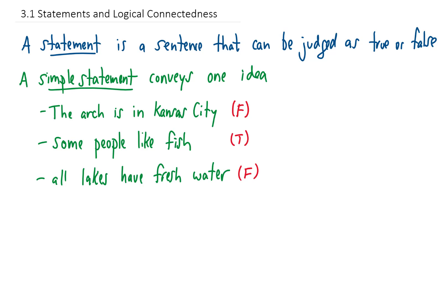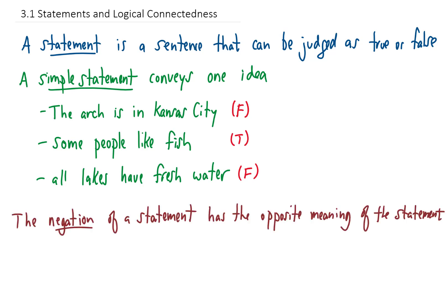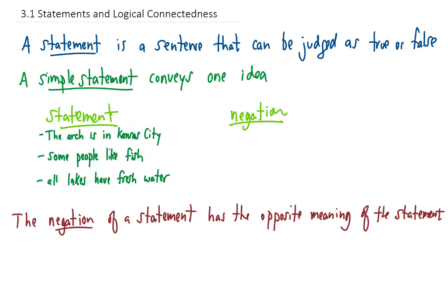The negation of a statement has the opposite meaning of that statement. The negation of a true statement is false, and the negation of a false statement is true. Let's write the negation of each of those statements. In finding the negation, you're just coming up with what you would say if you're taking the other side of an argument.